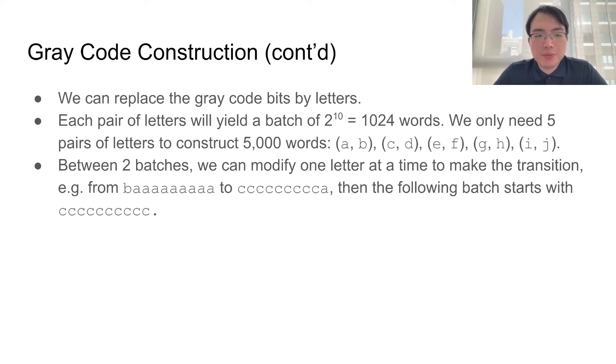We will just first change b to c, and then change the first a to c, the second a to c, and so on. You may verify that the intermediate strings that we obtain here will also satisfy the word ladder requirement.